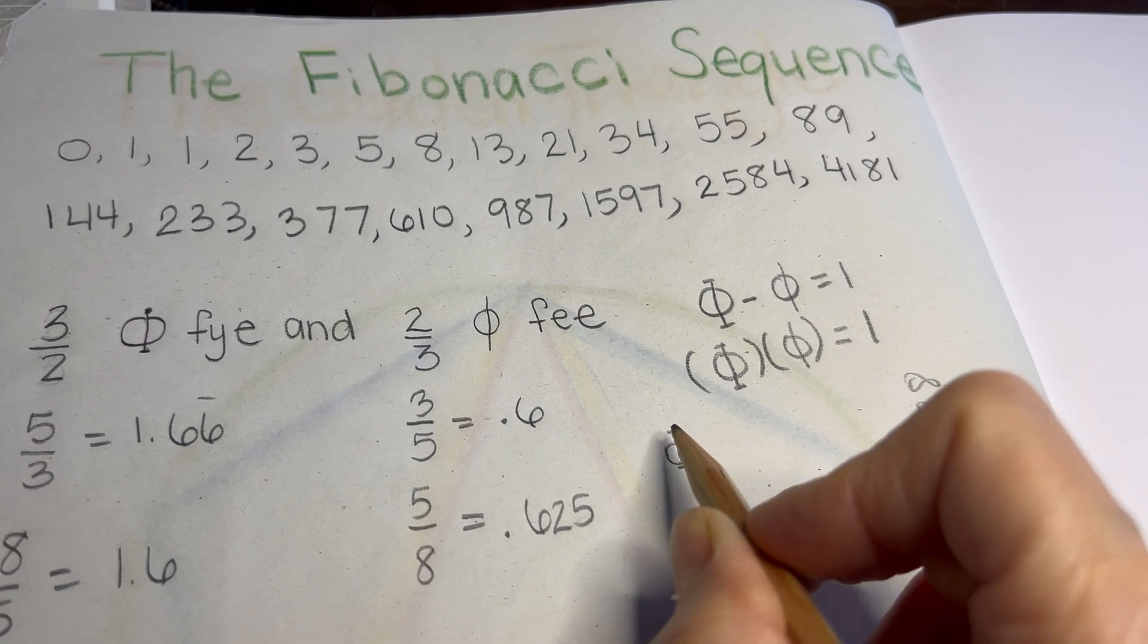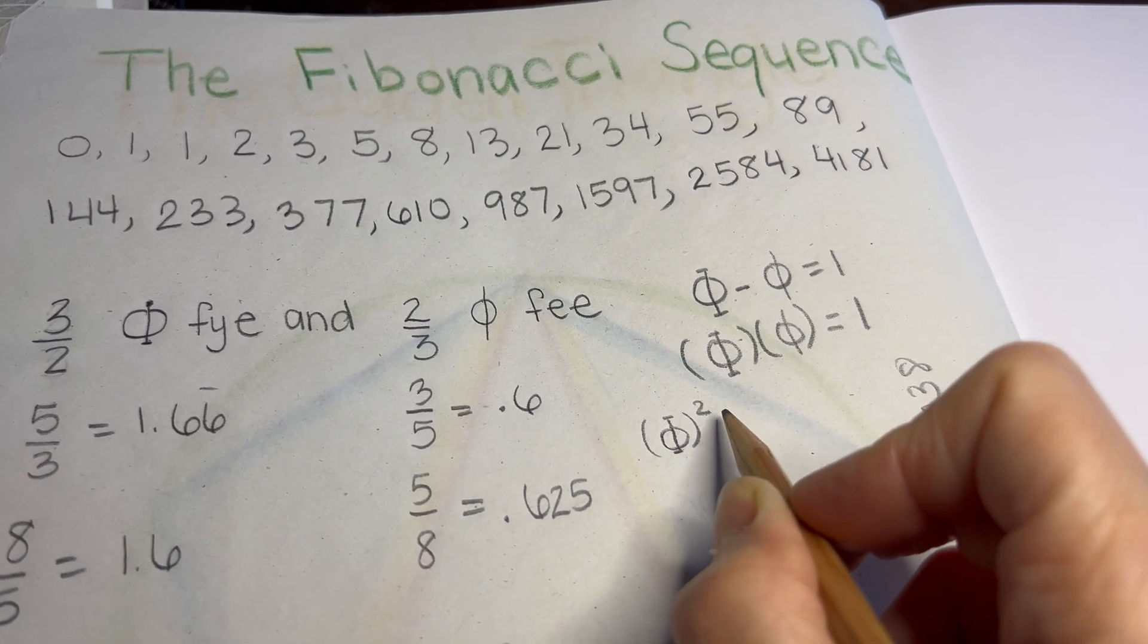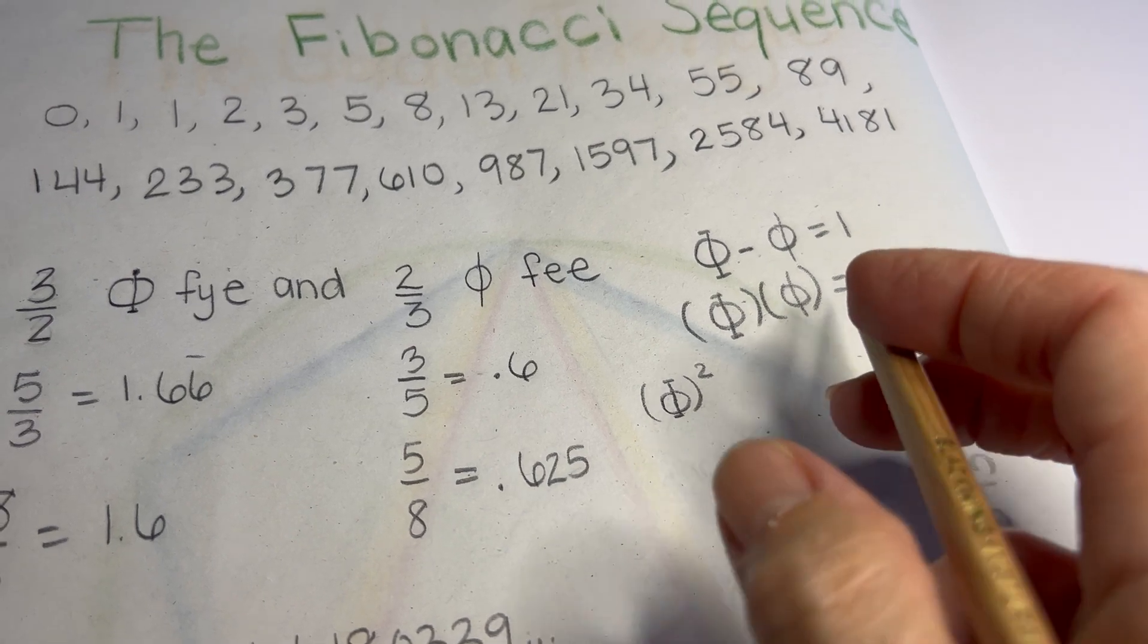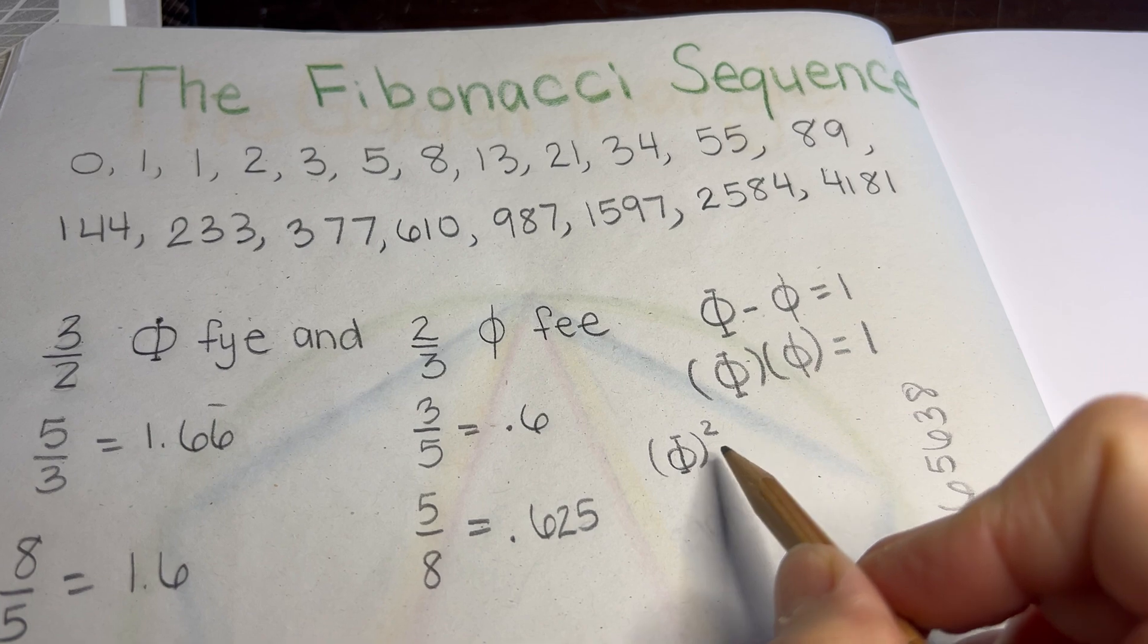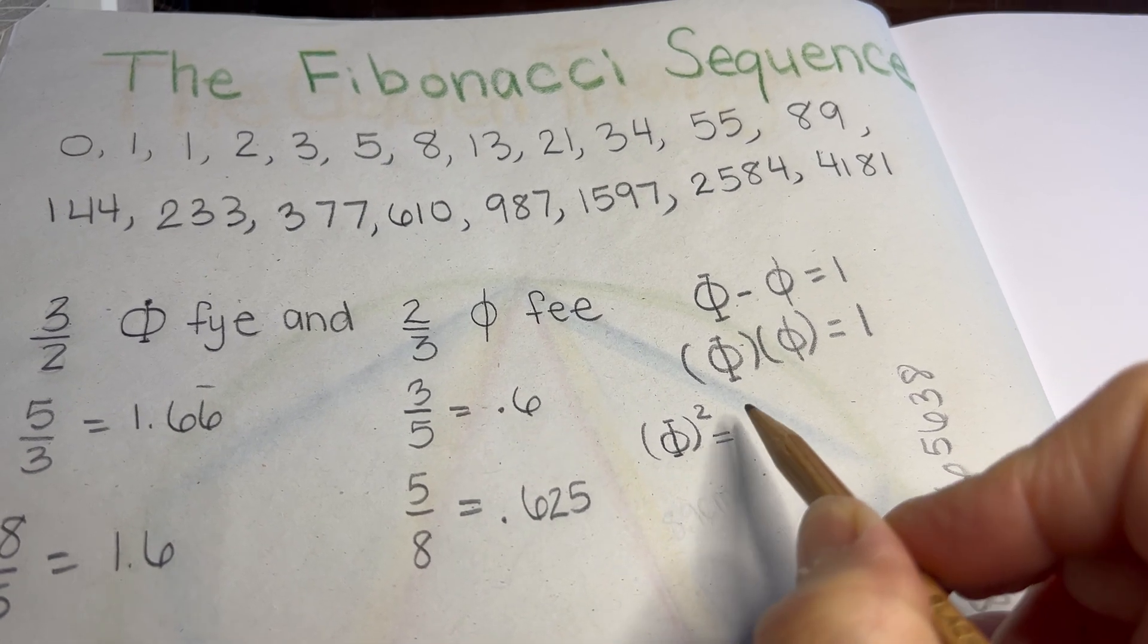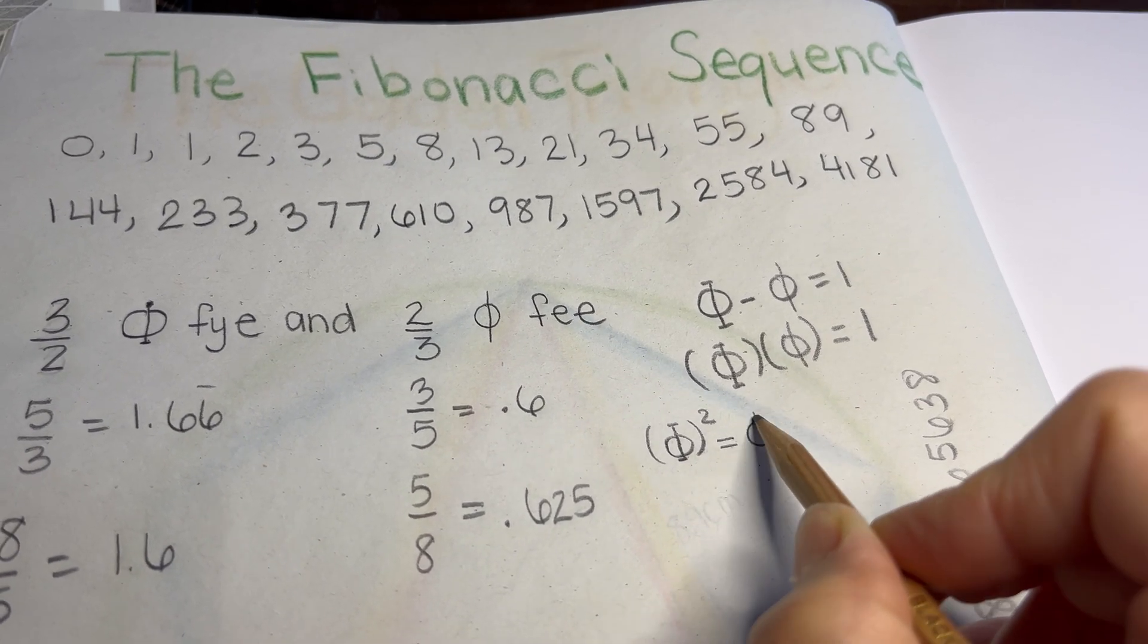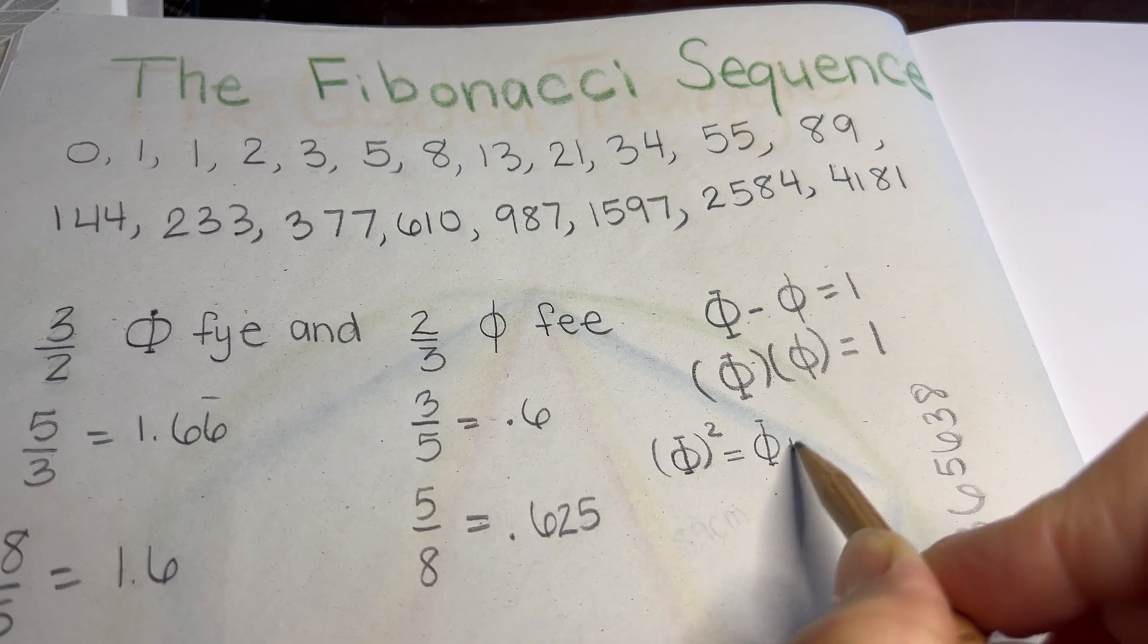So when you subtract phi from phi, you get 1. And when you take the product of phi and phi, you also get 1. And when you square phi, you get phi plus 1.